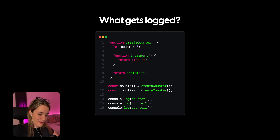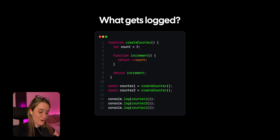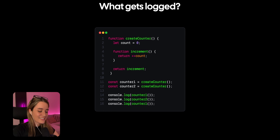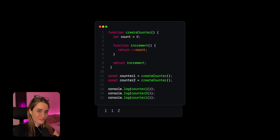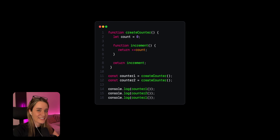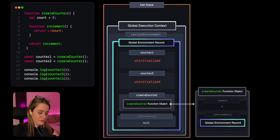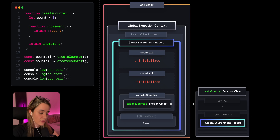I'm editing the video now — it's like 2am — but I figured I'd add a little quiz to see how well I've explained closures. Pause the video and see if you know what gets logged whenever we execute this code. The right answer is 1, 1, 2. We're working with two closures. Starting from where the global execution context has already been pushed onto the call stack, we have two uninitialized variables for counter one and counter two, and also a function object for the create counter function.